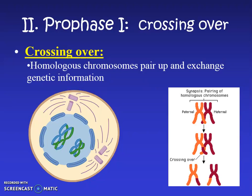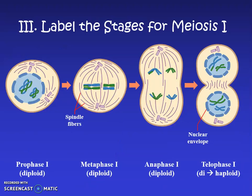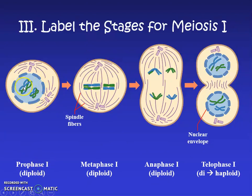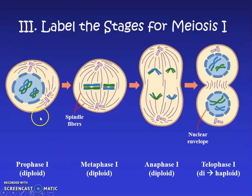Now let's look at the stages in detail. On your notes you'll see this diagram. For meiosis 1, we're going through PMAT. Label prophase 1 — notice they're diploid because there are two copies of every chromosome. At metaphase 1, the chromosomes meet in the middle and it's still diploid. In anaphase 1, the chromosomes move apart — still in one big cell but starting to separate.